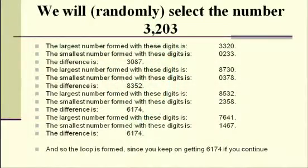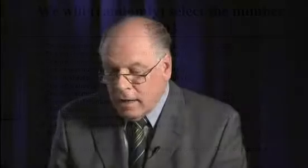Now, it doesn't always happen in three tries — sometimes it takes one step, sometimes several more. But once you reach 6174, let's continue: the largest arrangement of 6174 is 7641, the smallest is 1467, and their difference is 6174 again. You're now in a loop — you'll keep getting 6174. It's an amazing thing, and you really can't algebraically justify it. This is a quirk of the decimal number system, but when you show it to people who aren't yet convinced math can be fun, it takes you a long way in that direction.